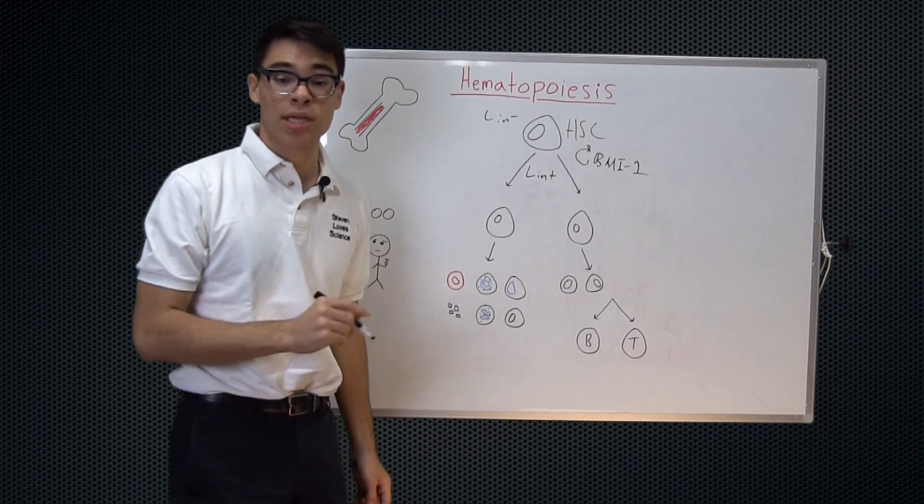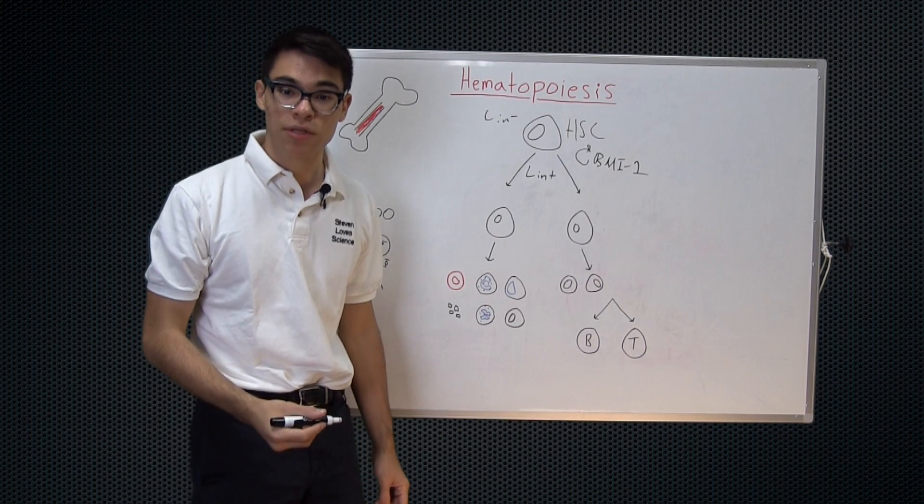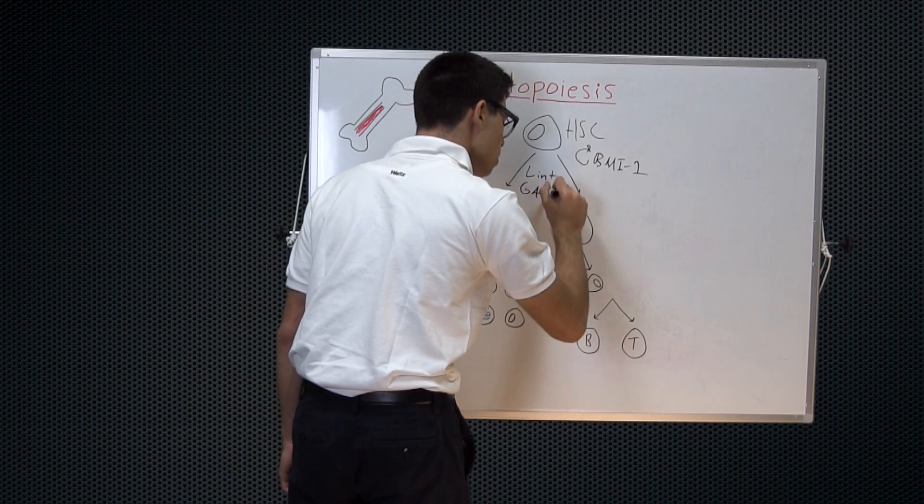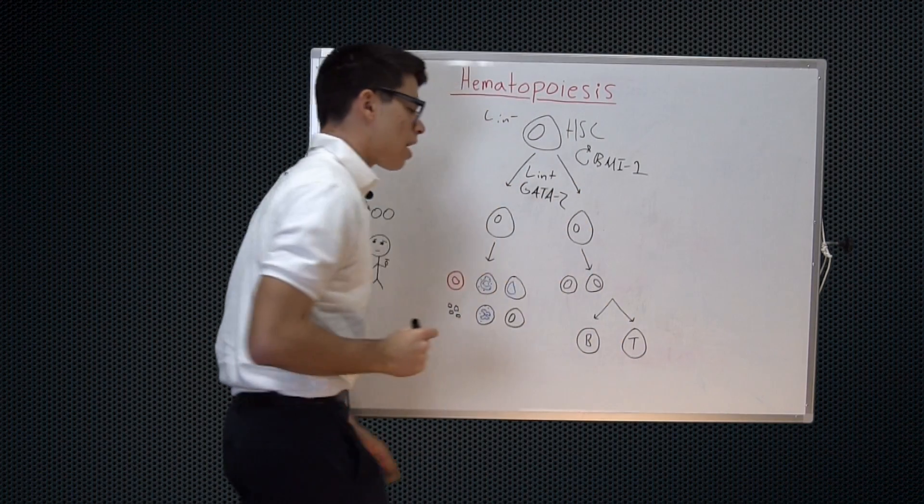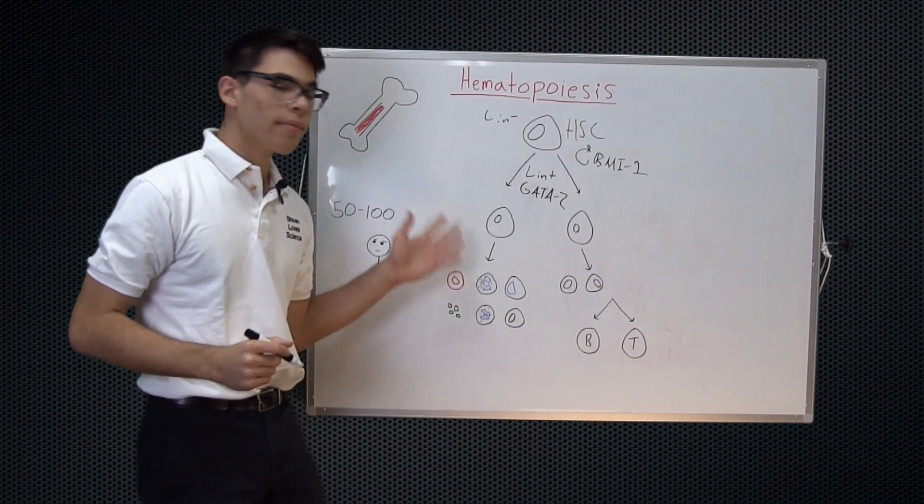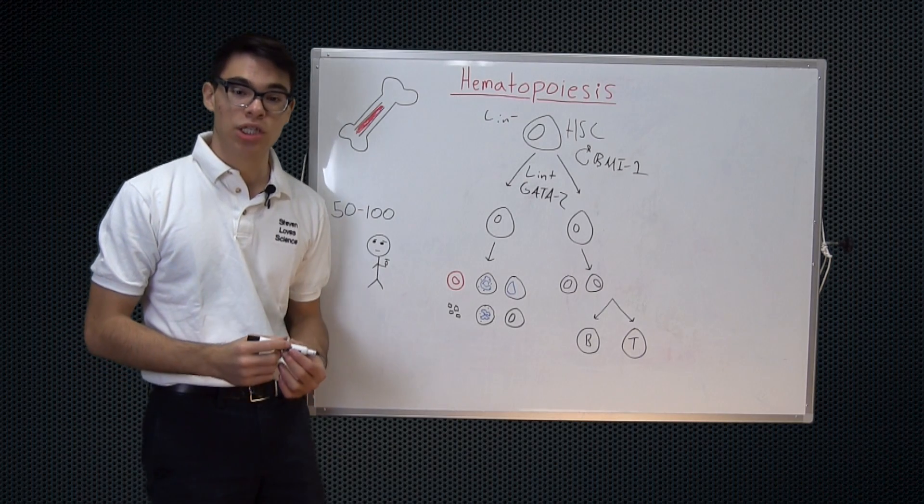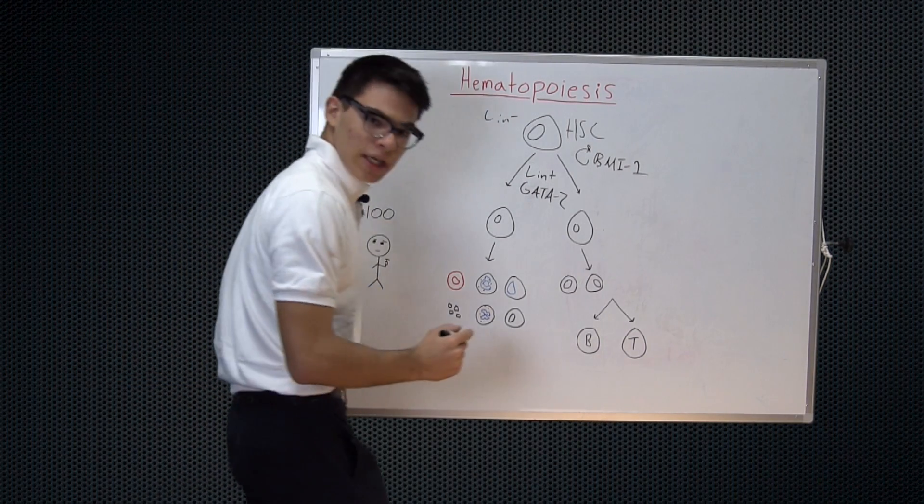So with the LIN-positive decision, we see the upregulation of a transcription factor called GATA2. So now it can either become a lymphoid cell or a myeloid cell. If it chooses to become a lymphoid cell, we can see the upregulation of another transcription factor called Icarus.